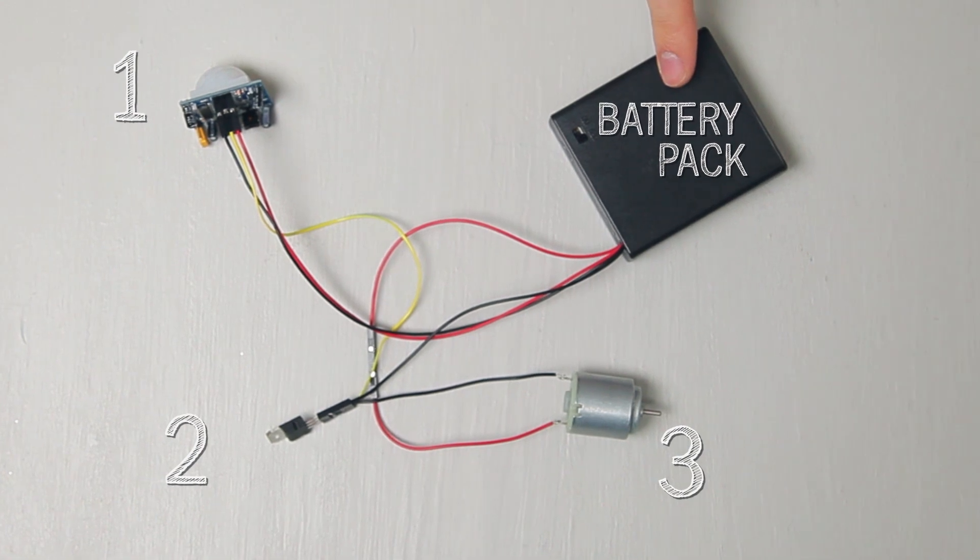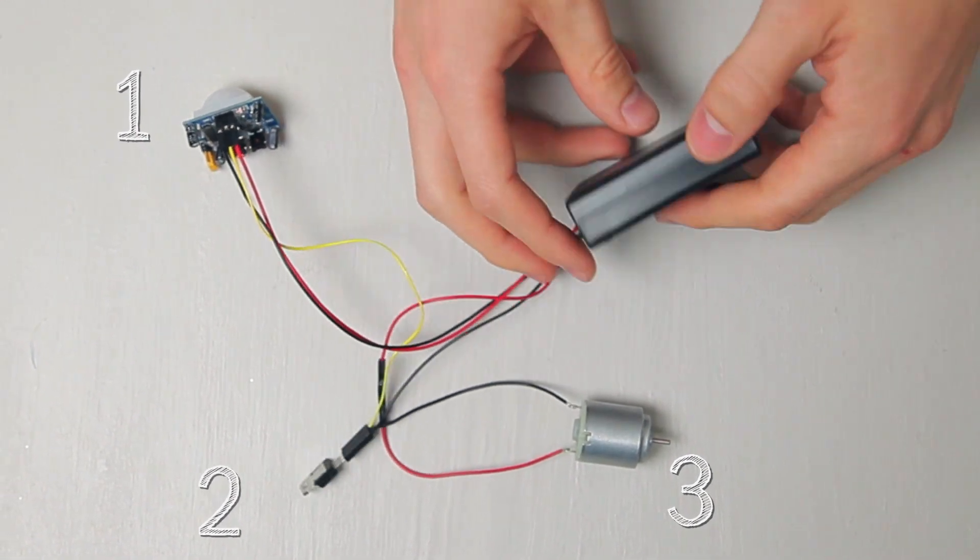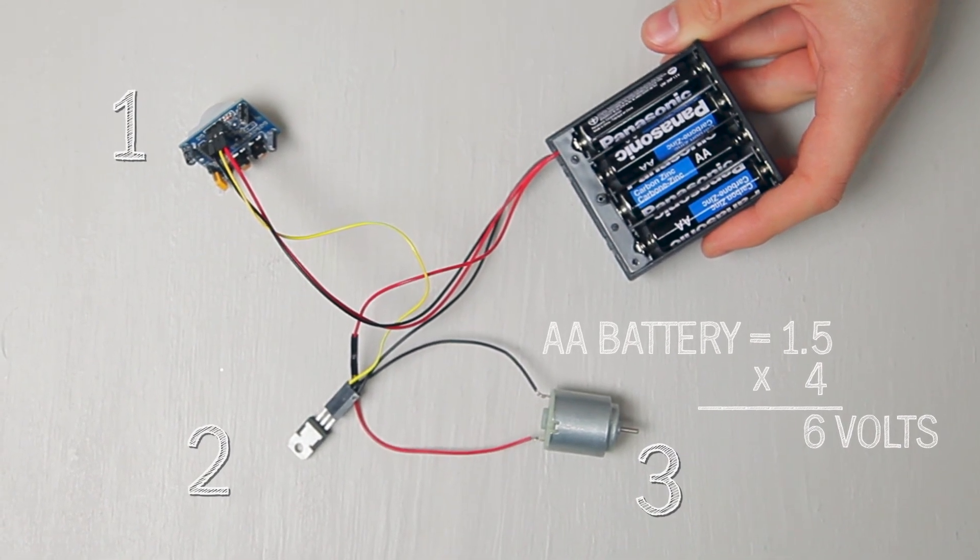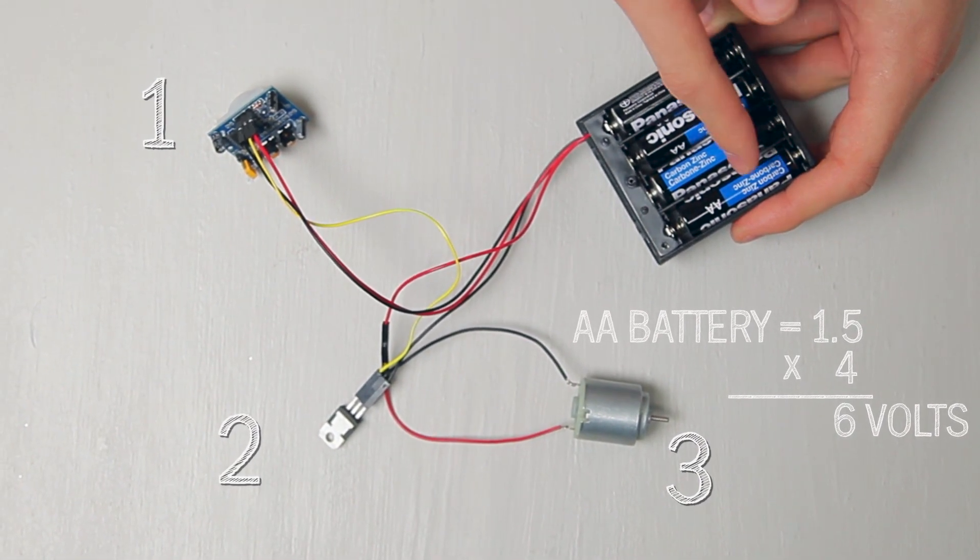So you have a battery pack. Here we have an on-off switch and then on the inside we have four AA batteries. Each AA battery holds 1.5 volts, so together we have six volts here.